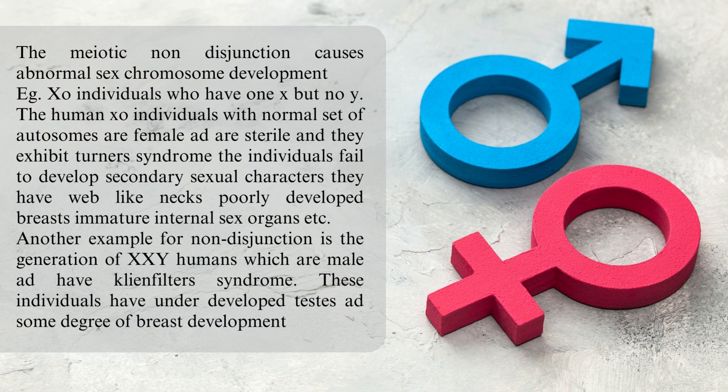Meiotic non-disjunction causes abnormal sex chromosome development — for example, XO individuals who have one X but no Y. The human XO individuals with a normal set of autosomes are female and are sterile, exhibiting Turner's syndrome. These individuals fail to develop secondary sexual characters; they have web-like necks, poorly developed breasts, and immature internal sex organs.